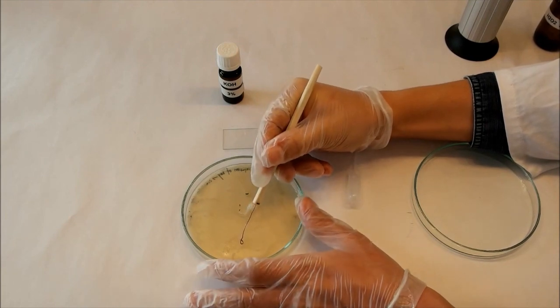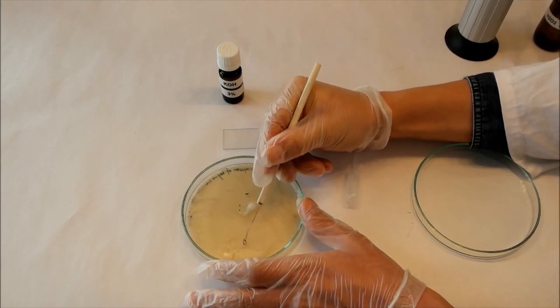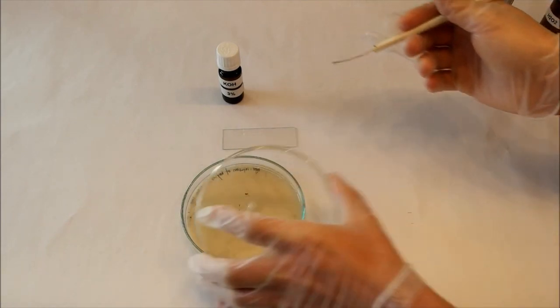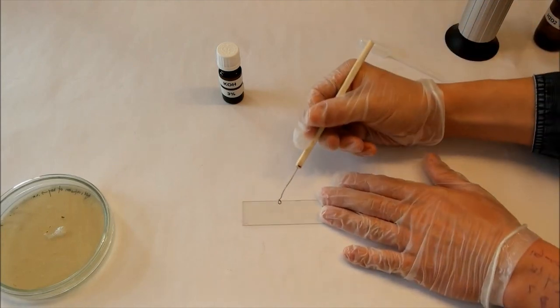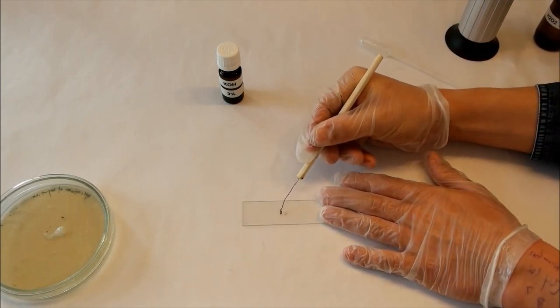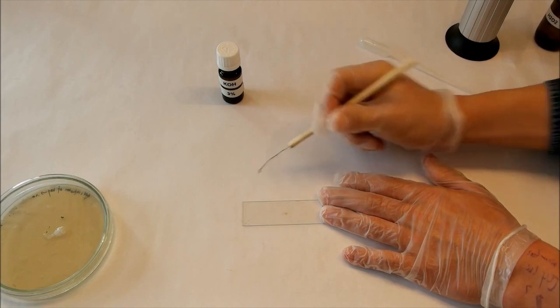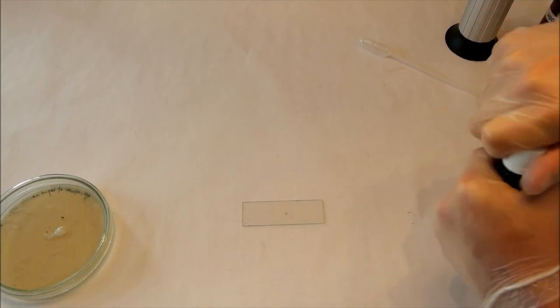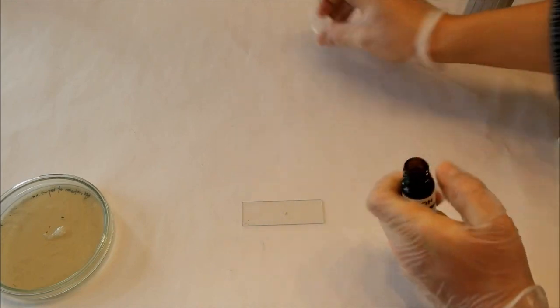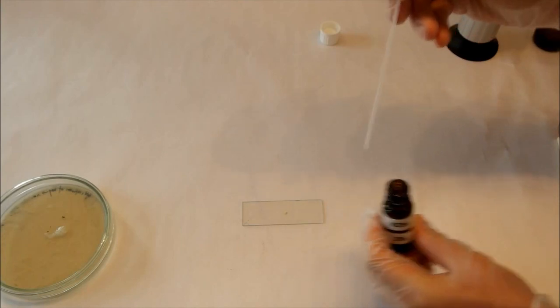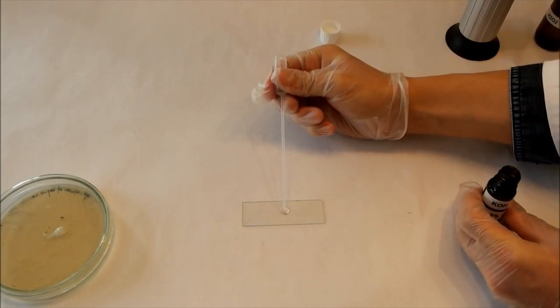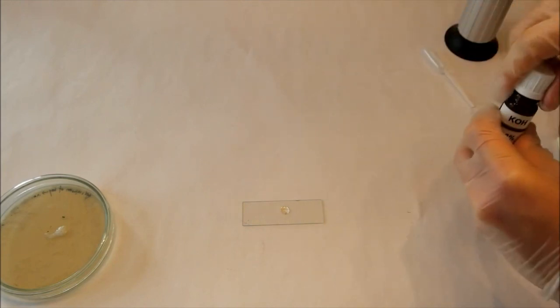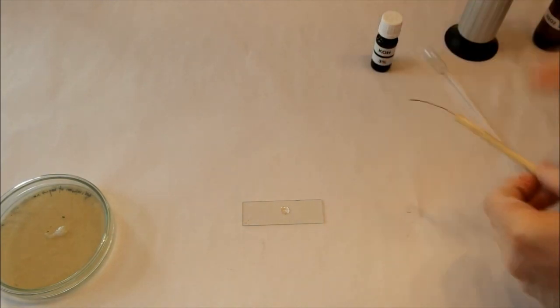I'll take this one. And now I've got bacteria on my loop, and then put it on this glass slide and mix this with a drop of potassium hydroxide solution. That's enough. And make sure to mix it very, very well.